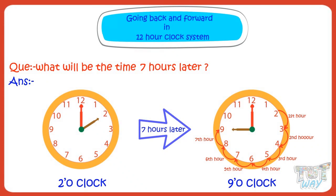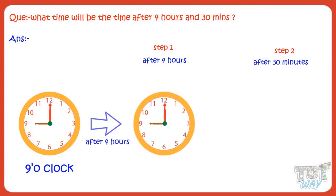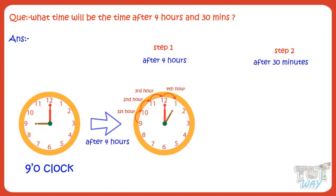Now, what will be the time after 4 hours and 30 minutes? We will calculate the required time in two steps. Let's first see what will be the time after 4 hours, and then we will calculate what will be the time after 30 minutes — this way it would be easier for you. The hour hand will move from 9 to 10, 10 to 11, 11 to 12, and 12 to 1. So it will be 1 o'clock after 4 hours.